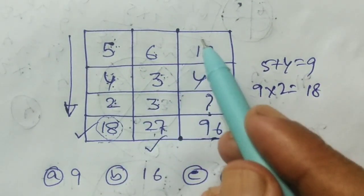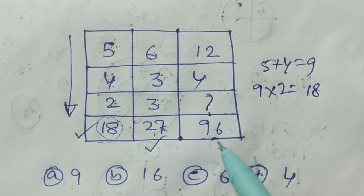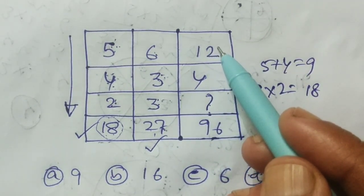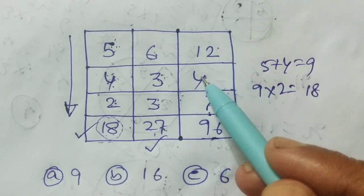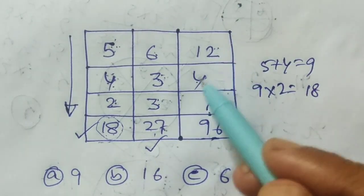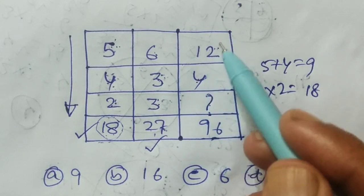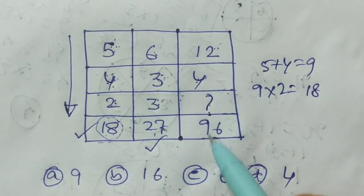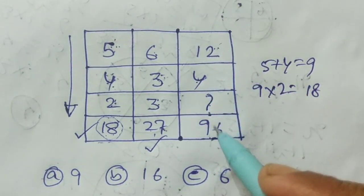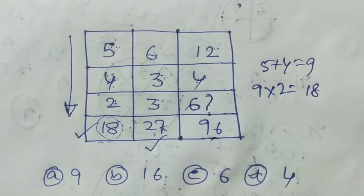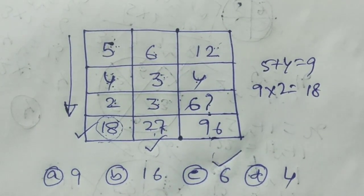It follows the same path. So for 12 and 4: 12 plus 4 is 16, and the result is 96. So 16 into 6 is 96. Therefore the answer — the missing number — is 6.